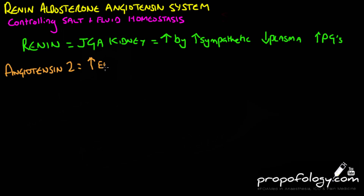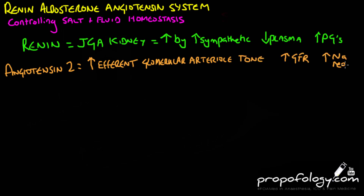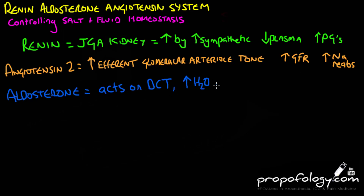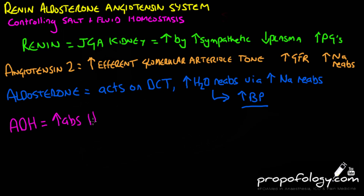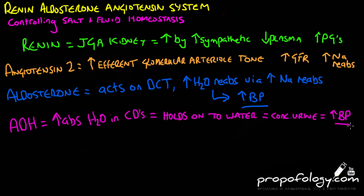Angiotensin 2 also increases the tone in the afferent glomerular arteriole, leading to an increased filtration fraction and increased sodium reabsorption. Aldosterone release is also potentiated by hyperkalaemia, acting in the distal tubule to cause sodium reabsorption that then facilitates water reabsorption. Antidiuretic hormone, or vasopressin, causes passive absorption of water from the collecting ducts, concentrating the urine so the body holds onto water.